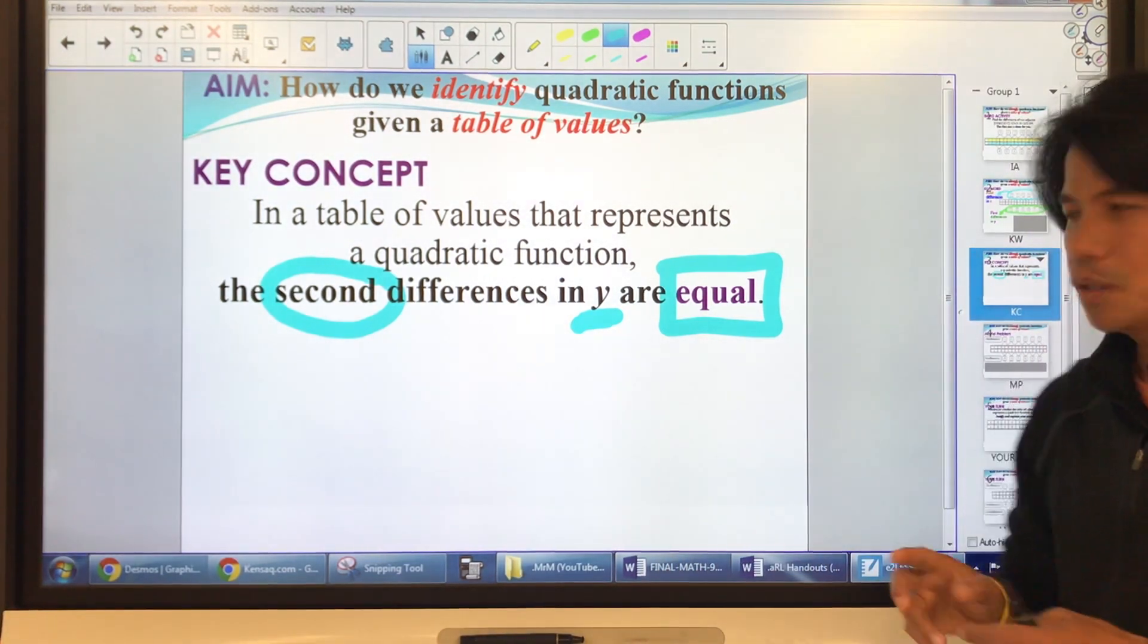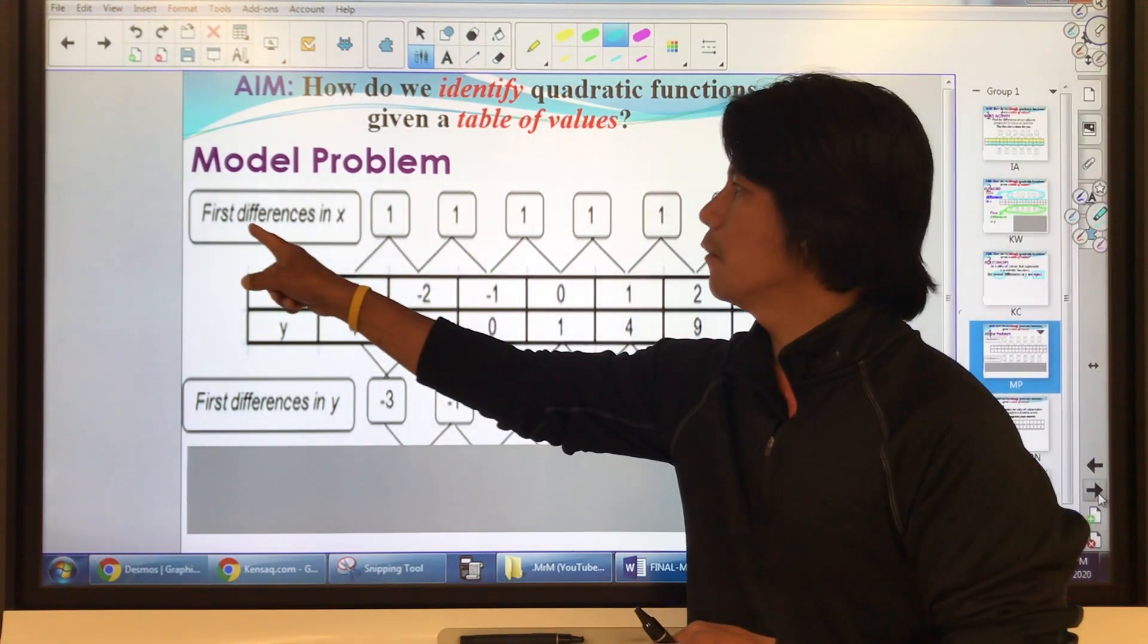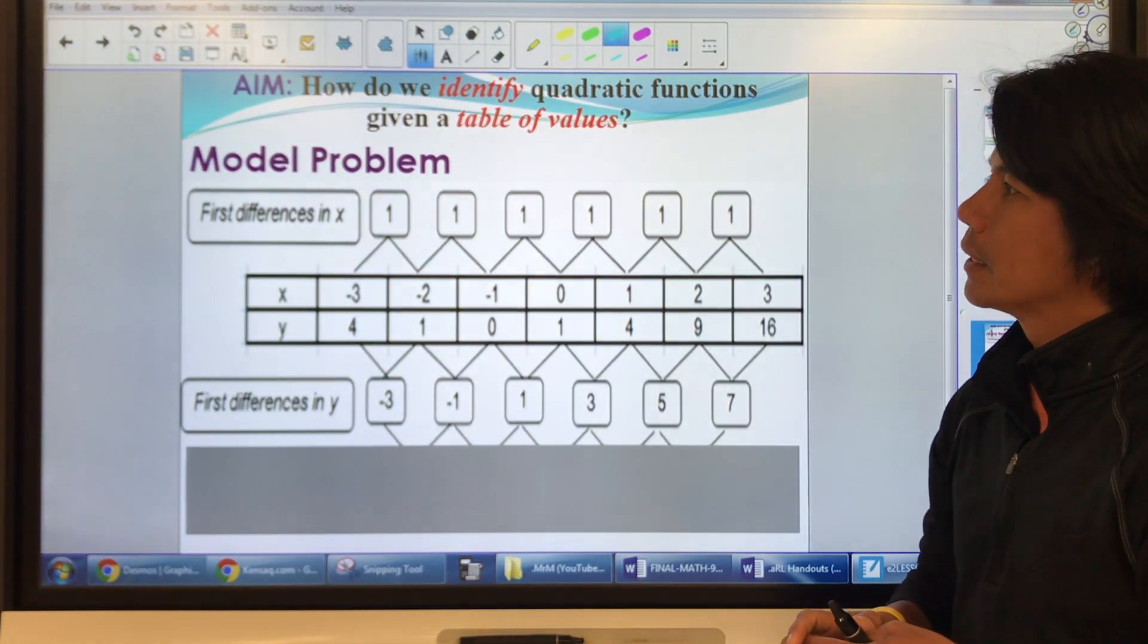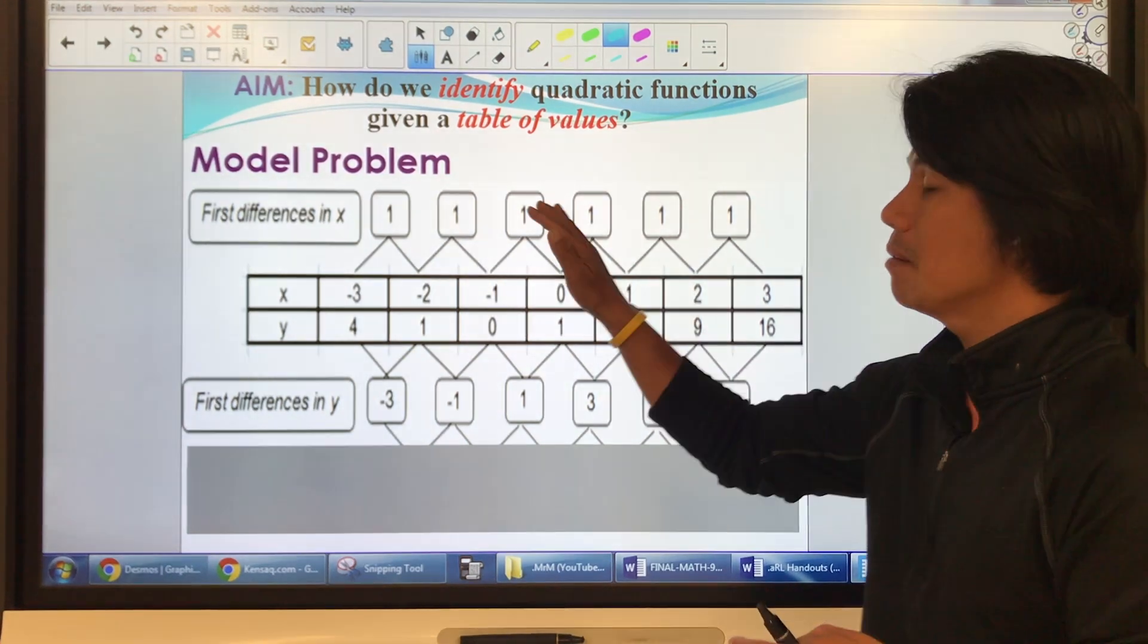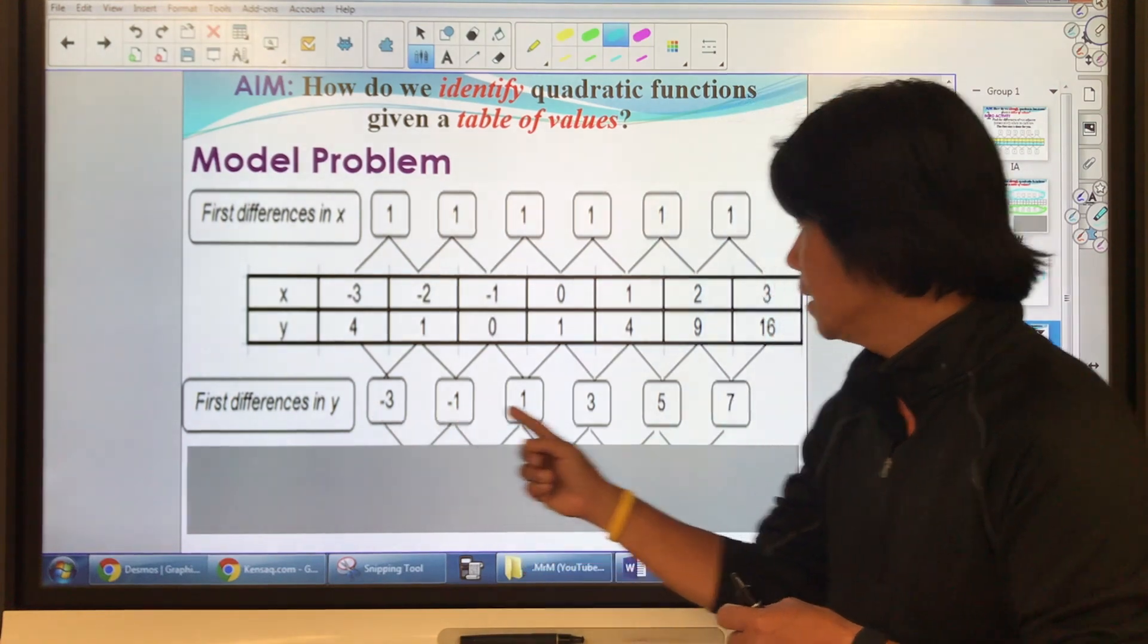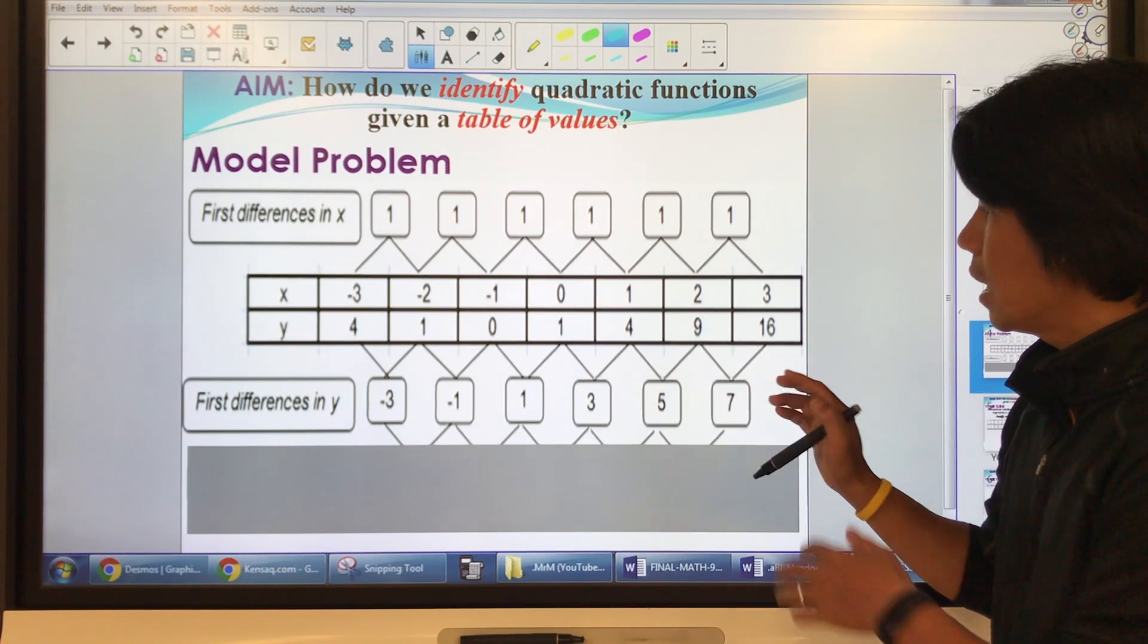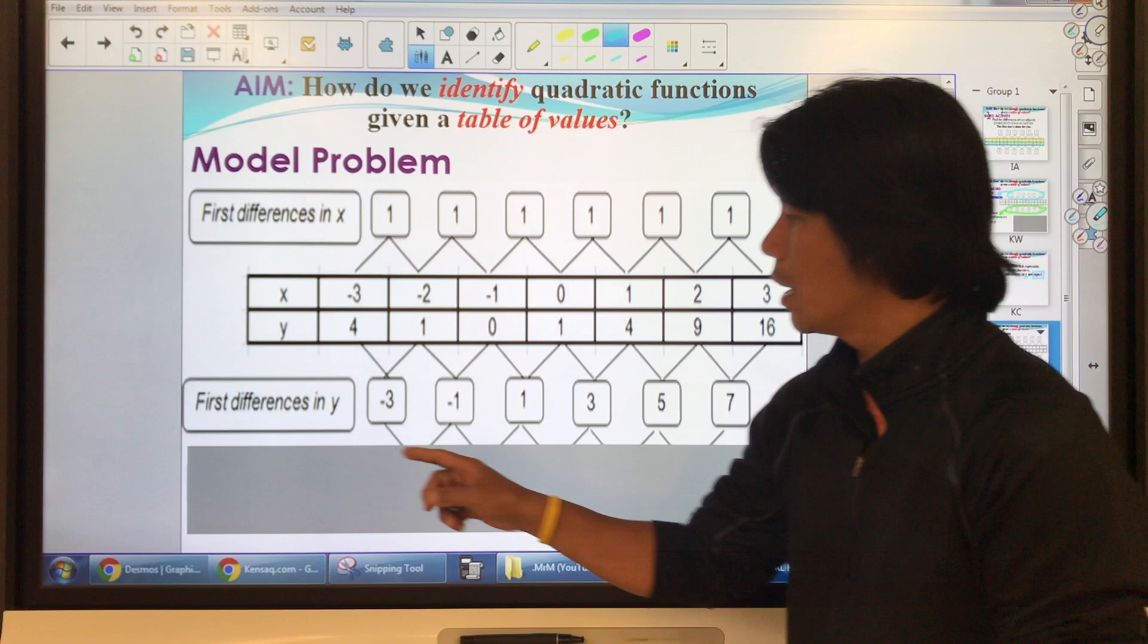Let's go to the model problem. Now take a look. I already did the first differences in x, so it's a requirement. You have to do it first. The first differences in x should be the same before you move forward. So first differences in y, let's take a look. 16 minus 9 that's 7, 9 minus 4 that's 5, and so on. So that's the first differences in y.